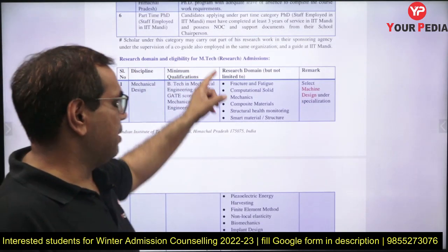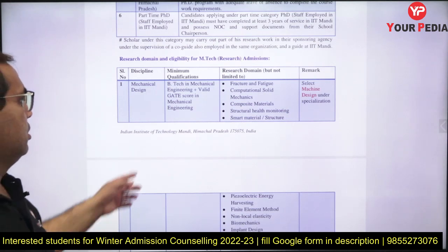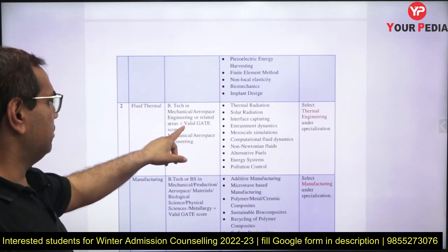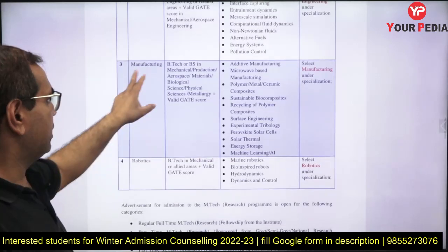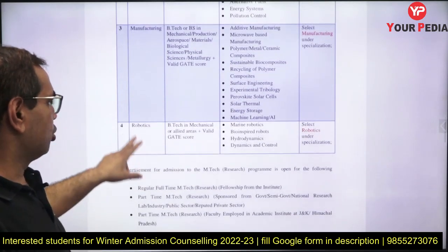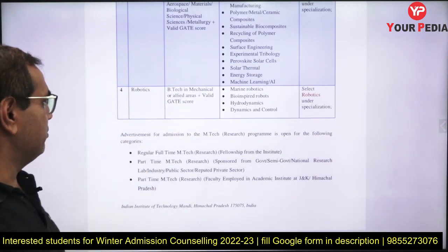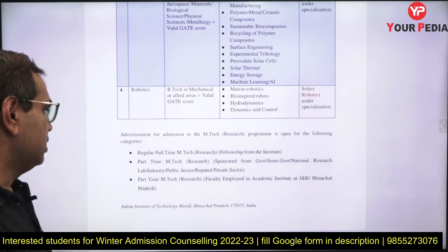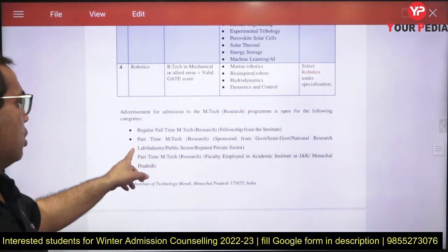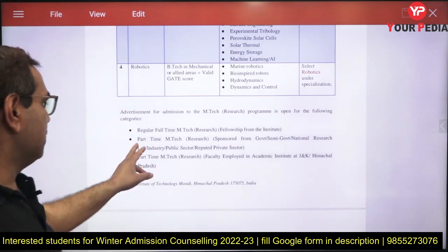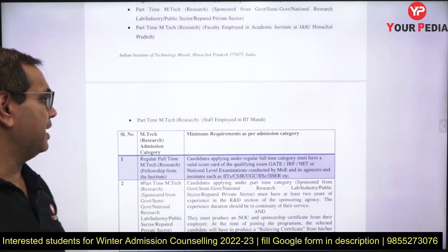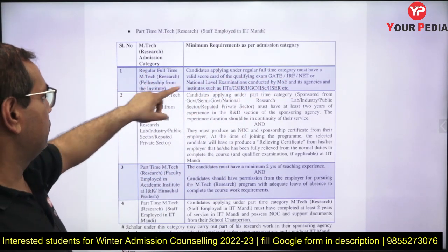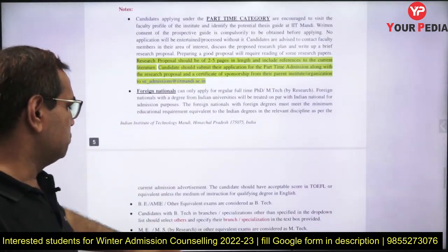For MTech Research: in Mechanical Design, BTech in Mechanical plus a valid GATE score in Mechanical is required. For Fluid Thermal, BTech in Mechanical or Aerospace plus valid GATE in Mechanical or Aerospace. Similarly for Manufacturing and Robotics, a valid GATE score is required. The main category for students is Regular Full-Time MTech Research. Part-Time MTech is for faculty, and there is also a Part-Time MTech Sponsored category for those from government, semi-government, or national research laboratories, and a category for IIT Mandi staff. GATE, GRF, or NET is compulsory if you want a scholarship under the Regular Full-Time MTech Research category.